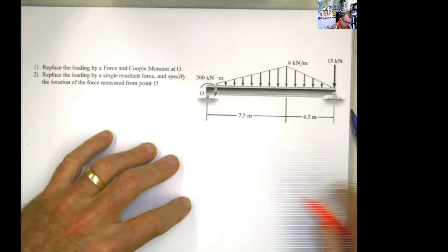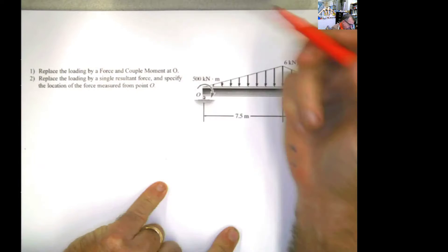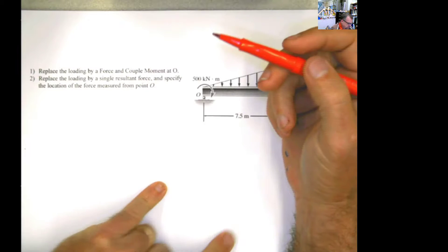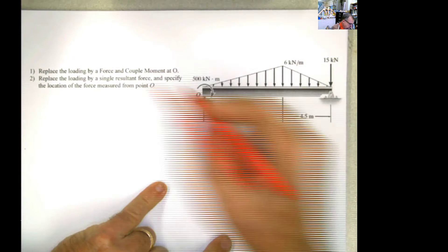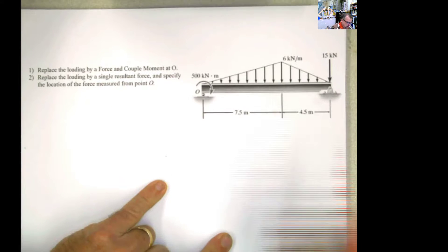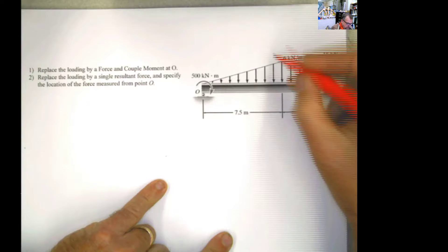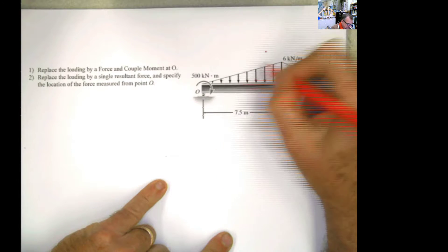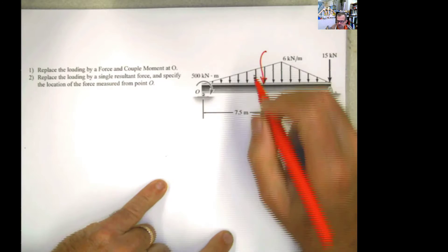The only difference here is that we have distributed loading. First, let's read the problem. Replace the loading by a force and couple moment at O, and then a single resultant force. In other words, the same thing that we did before, but now we have distributed loading.